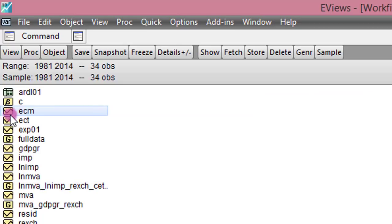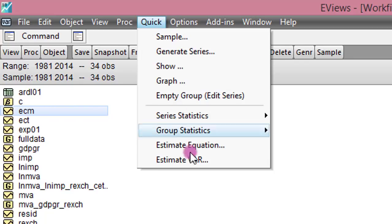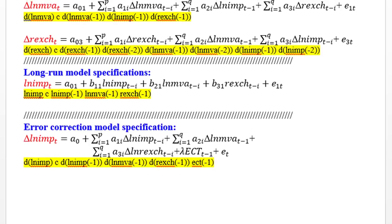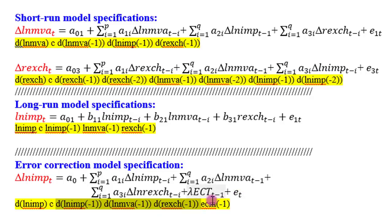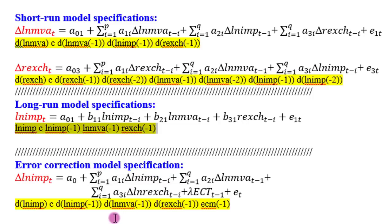To estimate the ECM, I go to Quick and click on Estimate Equation. I have the equation already spelled out — let me modify ECT to ECM. You can see here the difference parameter for the log of imports. Only one lag is appropriate for this model — this is one lag of the log of imports, one lag for MVA, one lag for real exchange rate, and one lag for the error correction term. These are all short run coefficients. The ECM represents the long run representation. We got the ECM from the residuals of the long run model. The error correction specification is a combination of the short run equation and the long run representation.